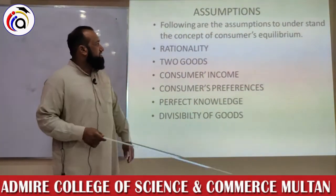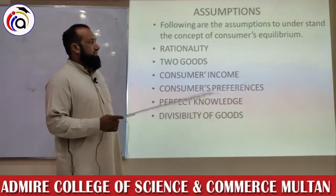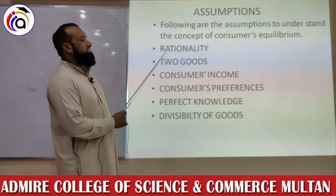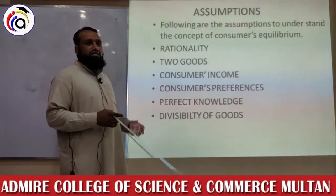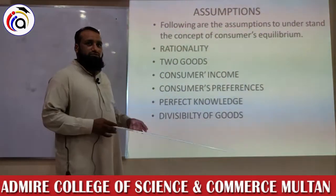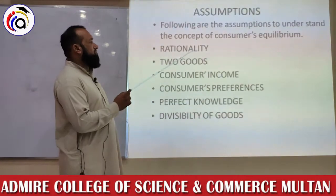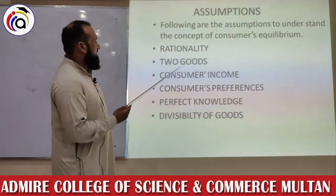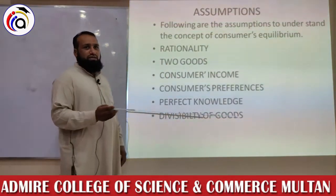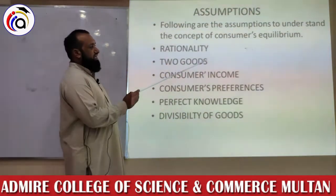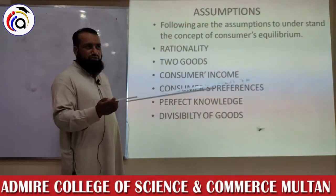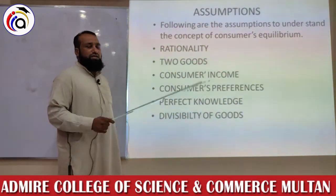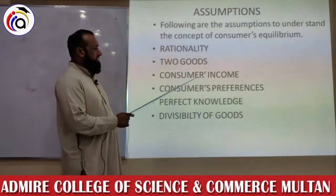Following are the assumptions to understand consumer equilibrium. One is rationality — we assume that the consumer is rational, well aware of his income and how to spend it to maximize his utility. Two goods model: there are two goods, X and Y, which the consumer purchases from the market. Consumer income is kept constant.